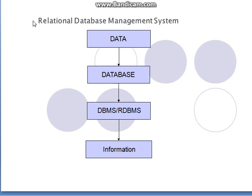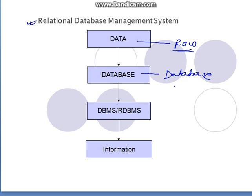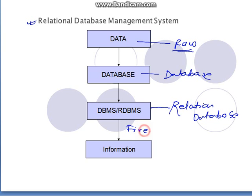The next topic in the relational database management system is about data. There is some raw data which comes in from industry; later it is formed into a database. It can also be related — the next form is nothing but the relational database, which comes into existence. When a lot of queries are fired on it, information can be derived from it.